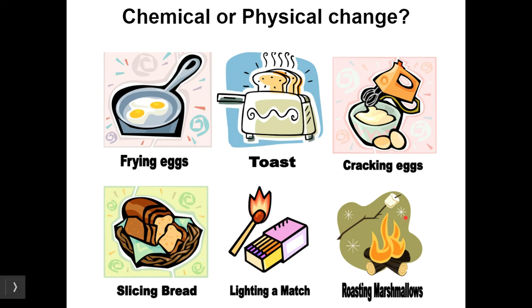Roasting marshmallows — they have a different smell and they change color, so that's a chemical change. Most cooking, except for things like boiling water, is going to be chemical change. Any kind of burning is going to be chemical change.